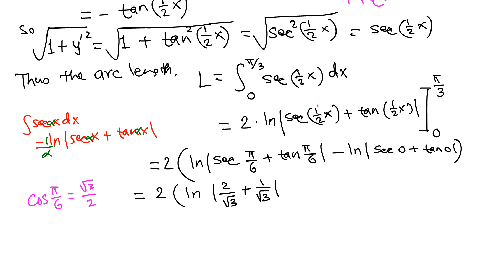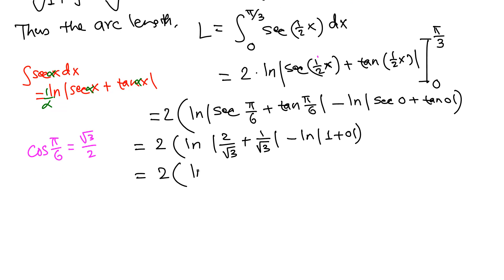So we have 2/√3 + 1/√3, minus ln|sec(0) + tan(0)|. Secant of 0 is the reciprocal of cos(0) = 1, so sec(0) = 1. And tan(0) = 0. So the second term is ln(1 + 0) = ln(1) = 0.